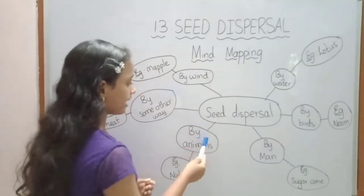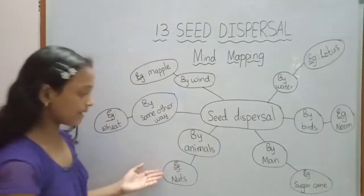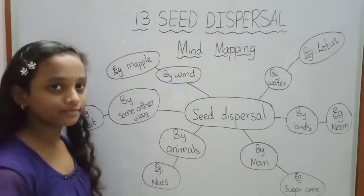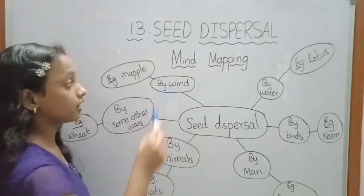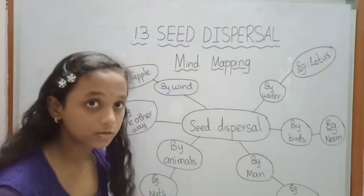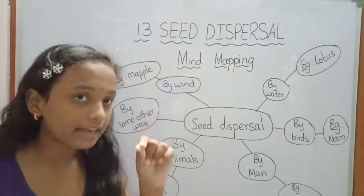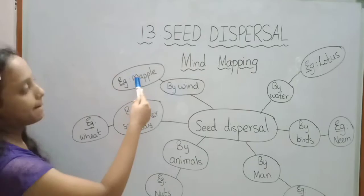Next way, by animals. For example, nuns. Some seeds are carried out by wind also because they are very light. For example, maple.